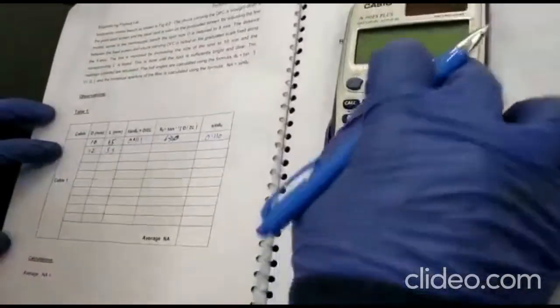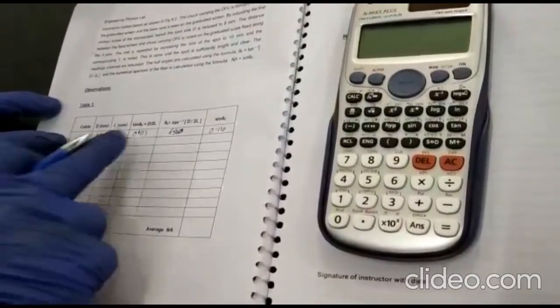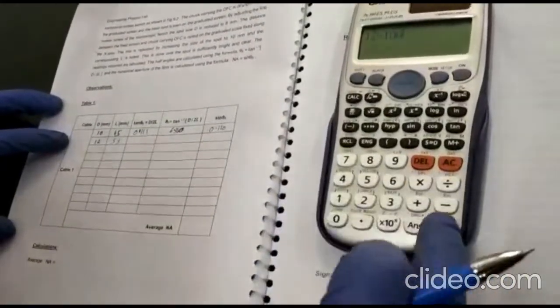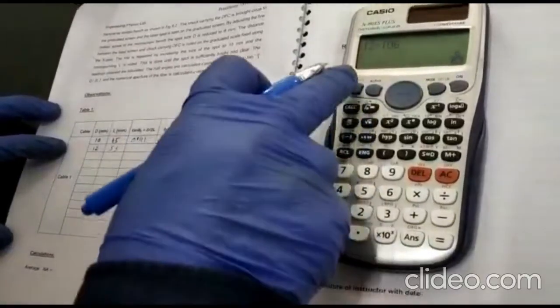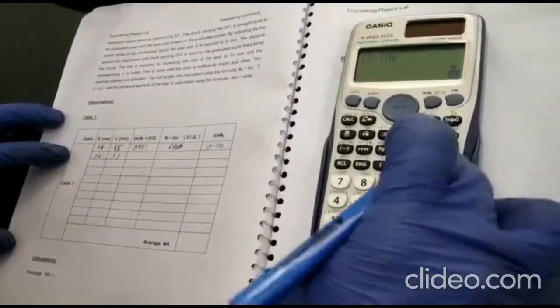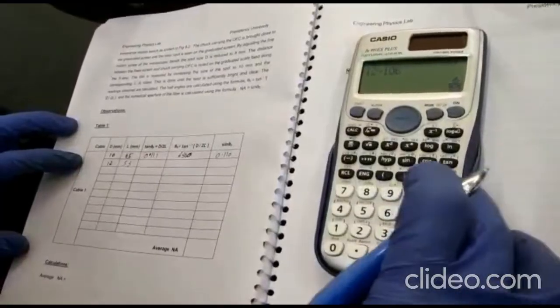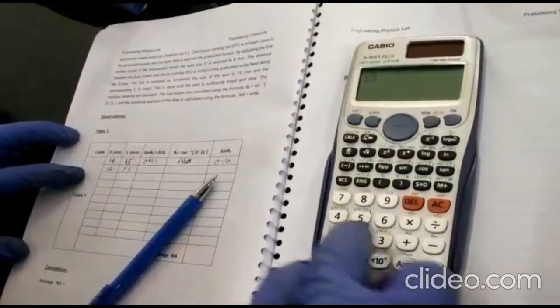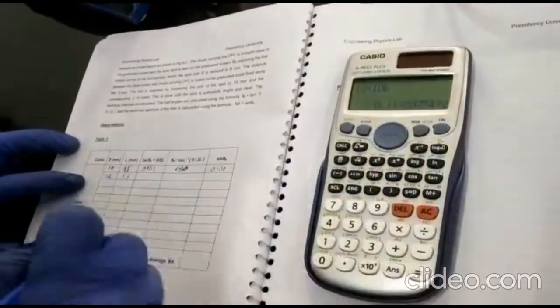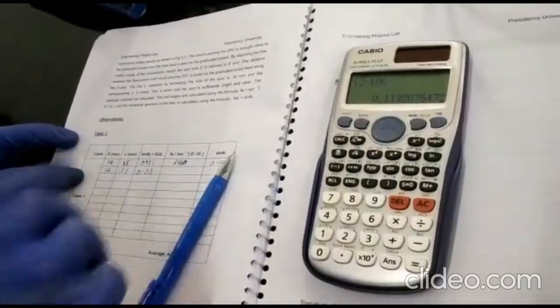For the second row also, you have to do in similar manner. So 2L, 2 times 53 is 106. So d by 2L is 12 divided by 106. So this is what you get, 0.111.